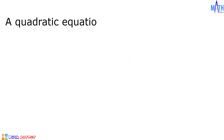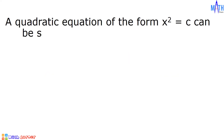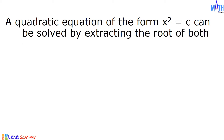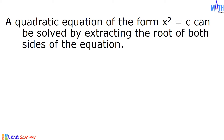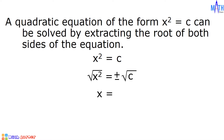A quadratic equation of the form x squared is equal to c, where c is a constant term, can be solved by extracting the root of both sides of the equation. By extracting the square root of x squared equals c, we have square root of x squared is equal to positive or negative square root of c. Since square root of x squared equals x, we have x is equal to positive or negative square root of c.